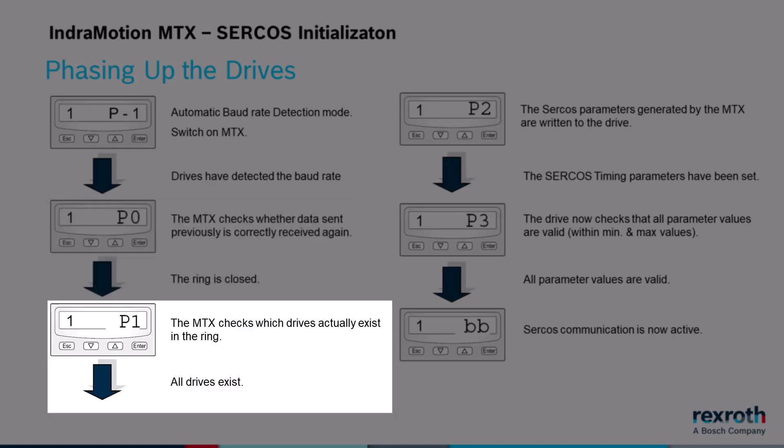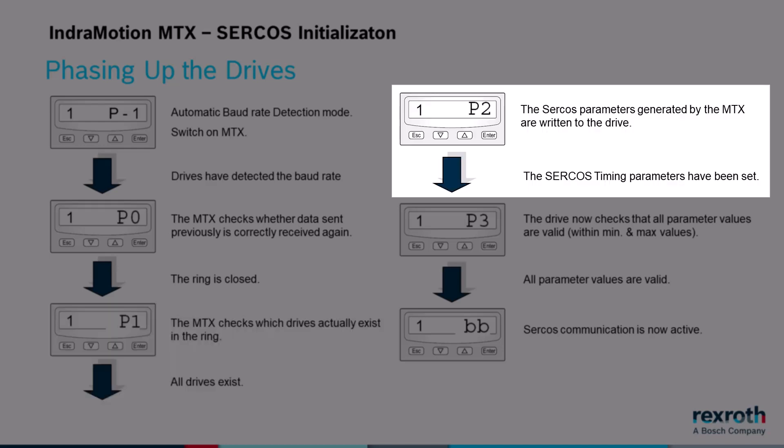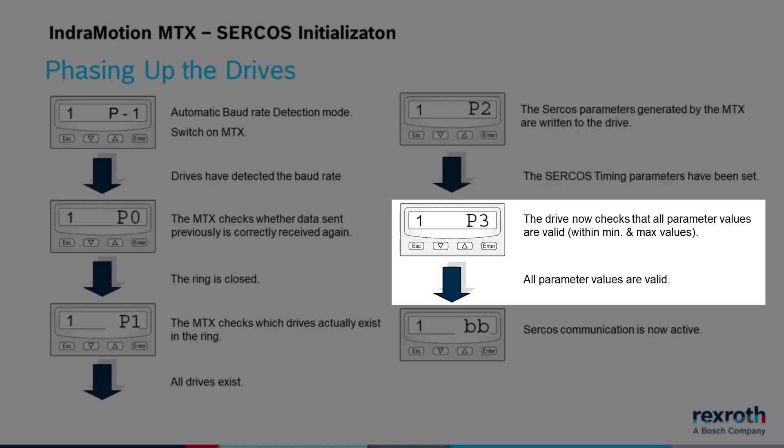In P1, it checks which drives actually exist on the ring before switching to phase 2. In phase 2, the CIRCOS parameters generated by the MTX are written to the drives. Once the CIRCOS communication parameters have been set, the control will switch the ring to P3. In P3, the drive will check that all parameter values are valid before switching the ring to P4, or what we call BB.